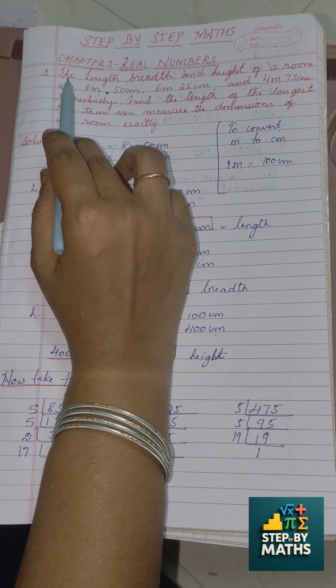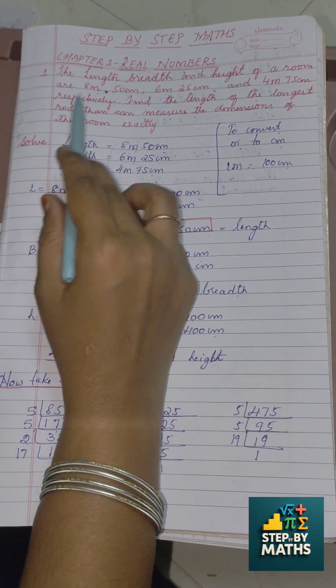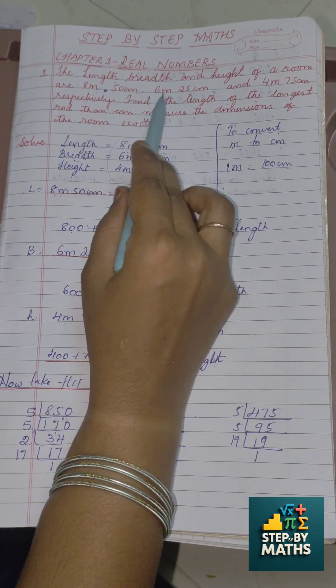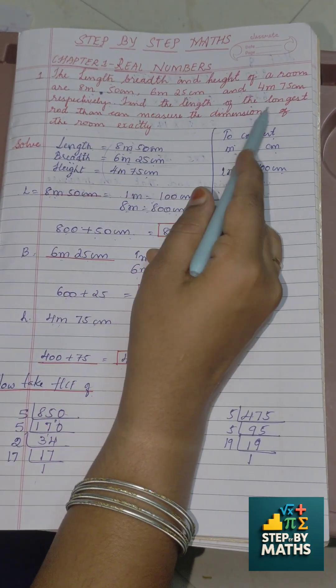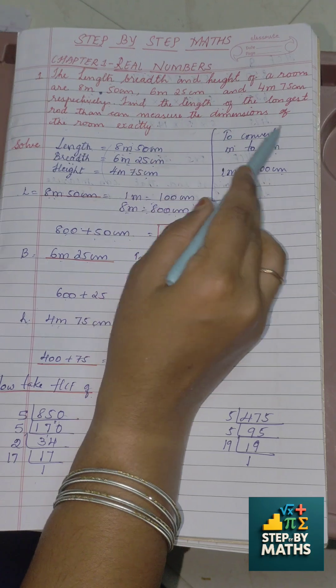Let me give the solution. The length, breadth, and height of a room are 8 meter 50 centimeter, 6 meter 25 centimeter, and 4 meter 75 centimeter respectively. Find the length of the longest rod that can measure the dimension of the room exactly.